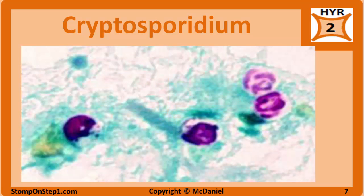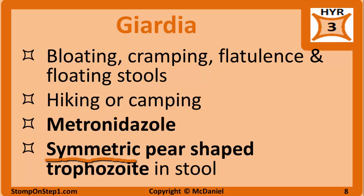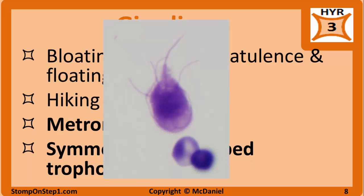Here is a picture of Cryptosporidium oocysts in stool on acid-fast staining. Giardia lamblia presents with bloating, cramping, flatulence, and fatty floating stools. Recent camping or hiking is often mentioned in the question stem. Metronidazole is the treatment of choice. On stool histology, Giardia can be seen as a symmetric pear-shaped trophozoite. Here is a picture of the Giardia lamblia trophozoite.